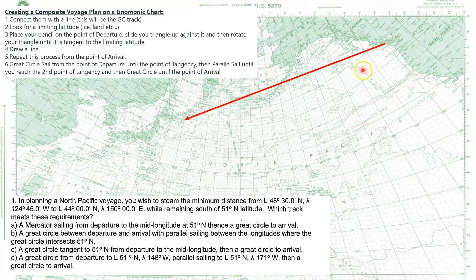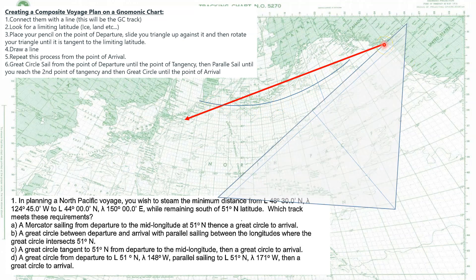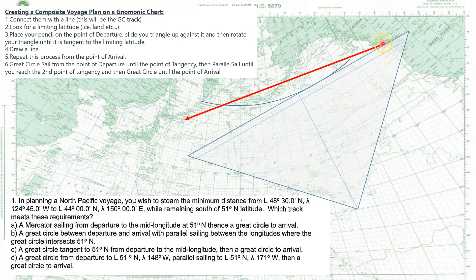So we're going to place our pencil on the point of departure, which is right over here. There's our limiting latitude — we scribe that. Then we put our pencil there and put our triangle up against the pencil, and we rotate the triangle until it just touches the 51°N line — just tangent. It can't cross the line to intersect in two places; it's got to just touch. That's what tangent means. So you keep the pencil as a pivot and rotate until it just touches the 51°N line, then stop and draw a line.